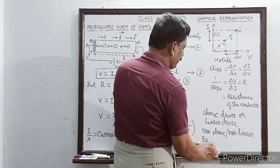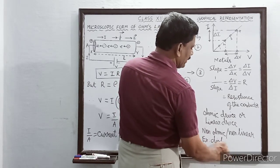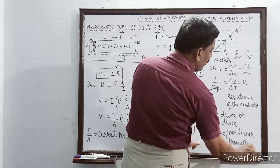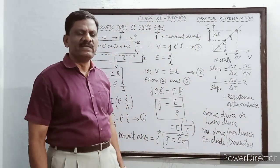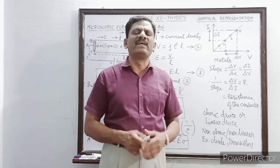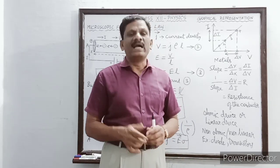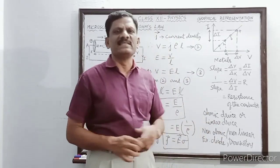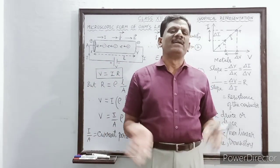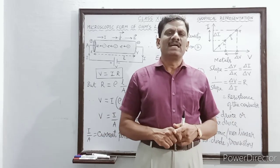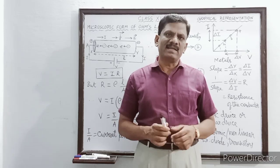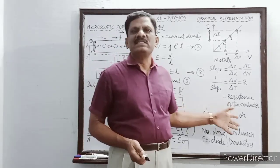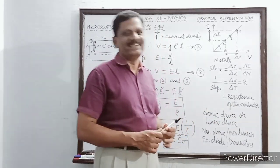Examples of non-ohmic devices include diodes, transistors, and other semiconductor devices — for these, the voltage-current graph is not a straight line. An ohmic device obeys Ohm's law with a straight-line V-I graph passing through the origin; a non-ohmic device does not obey Ohm's law and the graph is curved, making it also called a non-linear device. We end this topic here; next we will see drift velocity and the relation between current and drift velocity.